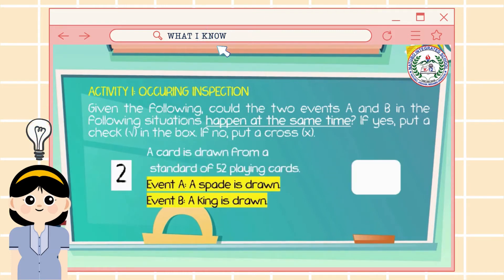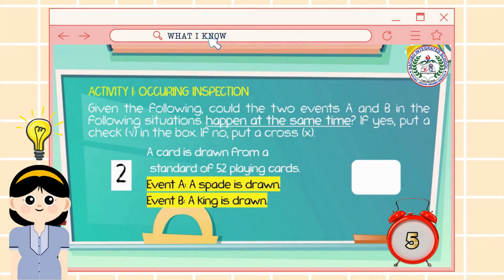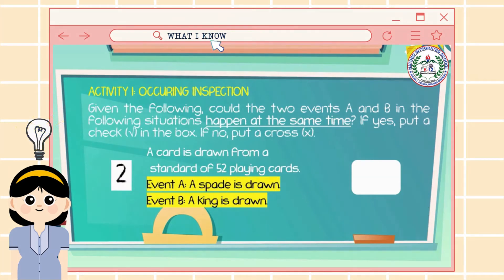Number 2: A card is drawn from a standard deck of 52 playing cards. Event A: a spade is drawn. Event B: a king is drawn. The answer is Checked! We can have a spade and a king at the same time — through the king of spades.